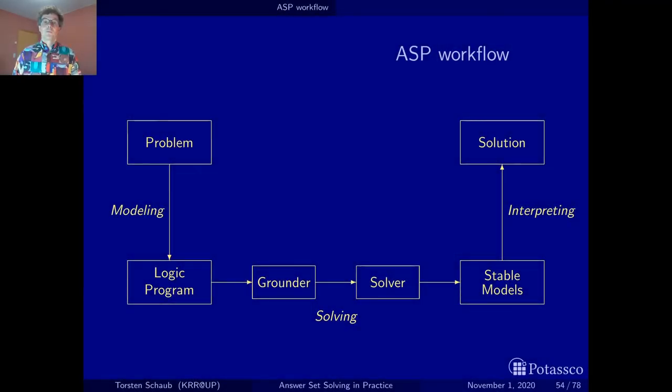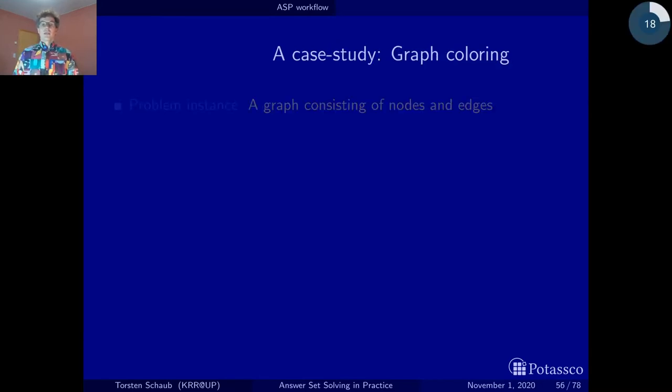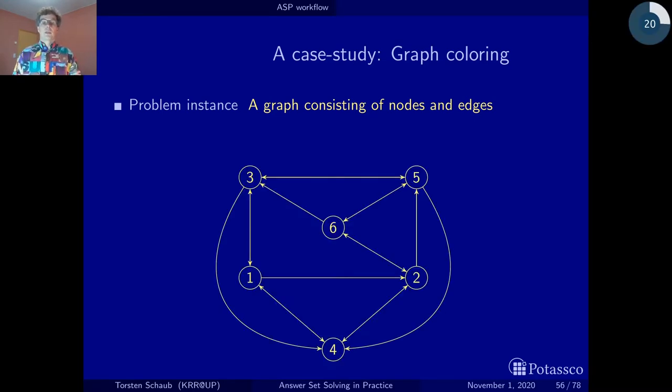At the beginning is a problem. I have chosen graph coloring as the exemplar to illustrate to you the basic cornerstones of the ASP's workflow. We first have to understand what the problem is and what we're dealing with. In graph coloring, we color graphs and a graph consists of nodes and edges. Here's the example that we are using. We have a graph. This is actually a directed graph with six nodes and some edges between them. This is the problem instance already.